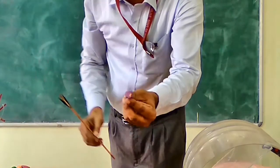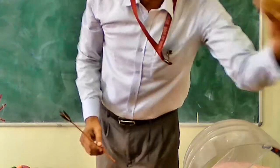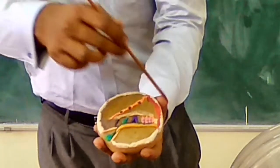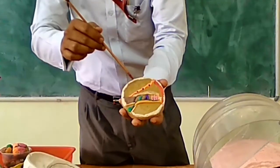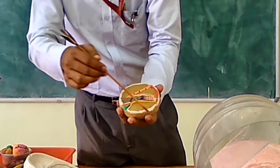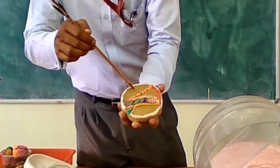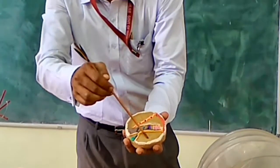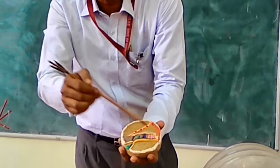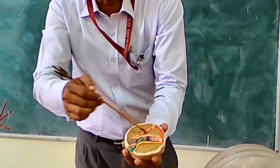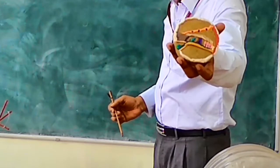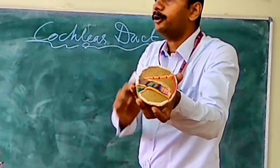If we zoom into this membranous labyrinth and bony labyrinth section, we will see something like this — a cross-section of the cochlear duct, very commonly seen in textbook pictures. Here we can see the different channels: one, two, three — the scala vestibuli, scala tympani, the scala media, the basilar membrane, and the organ of Corti on it. This is a very common picture seen in textbooks.